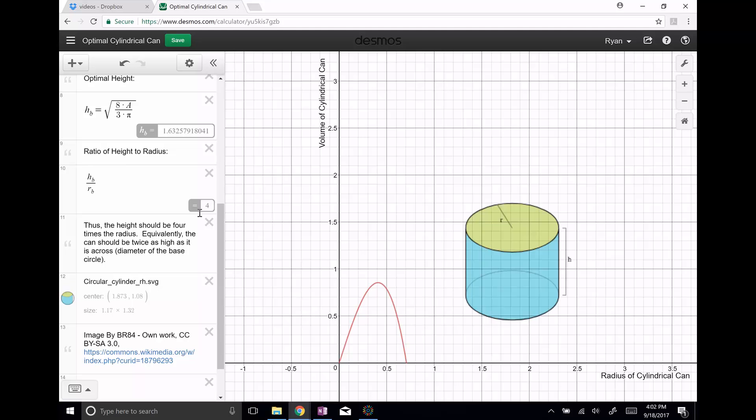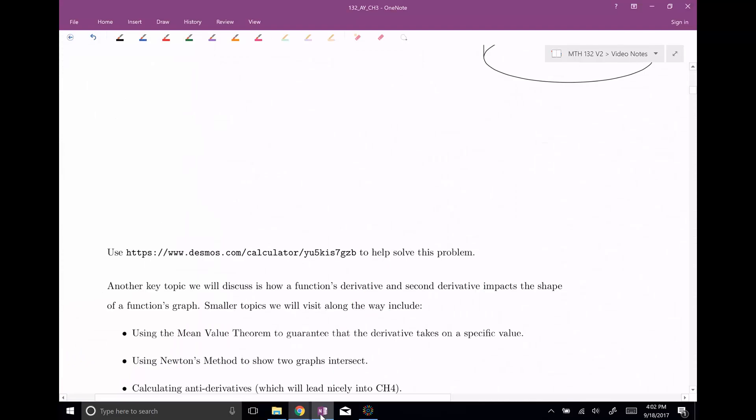Equivalently, the can should be maybe twice as high as it is across. That's how you would maximize the volume. All right, so there is kind of an optimization style question that we will be able to solve using calculus.